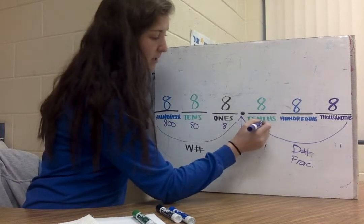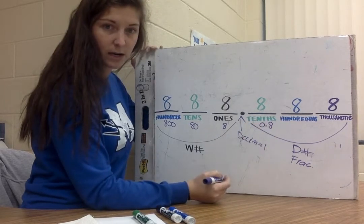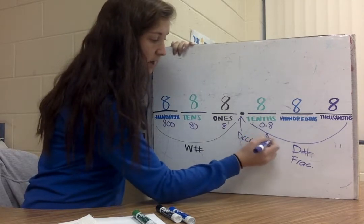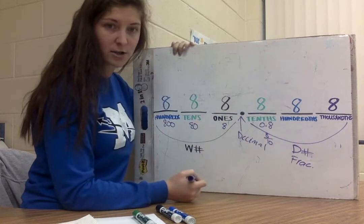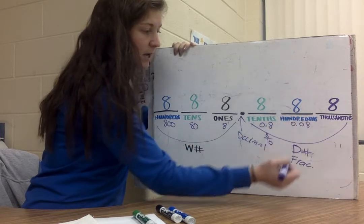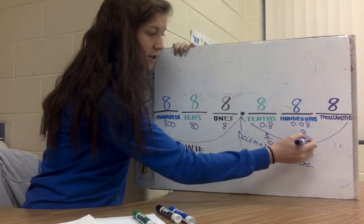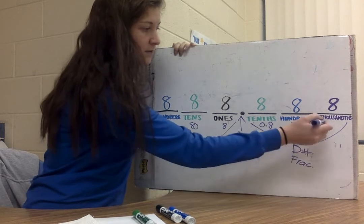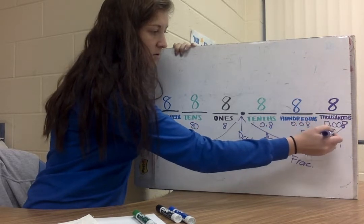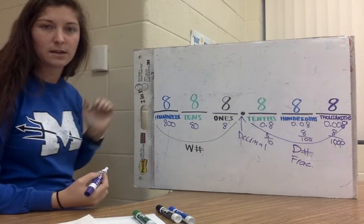For the tenths place, that has a value of 8 tenths, and it can be written like that, 0.8 or 8 tenths as a fraction. For eight hundredths, 0.08, zero and eight hundredths, or as a fraction. And last but not least, for the thousandths, same thing. Eight thousandths or 8 over 1,000, just like that.